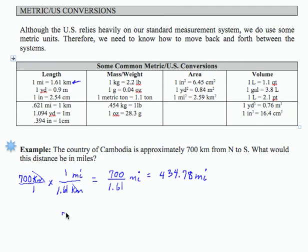Therefore, 700 kilometers converts to approximately 434.78 miles.